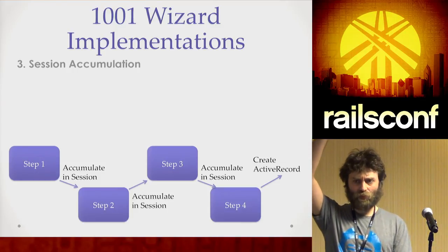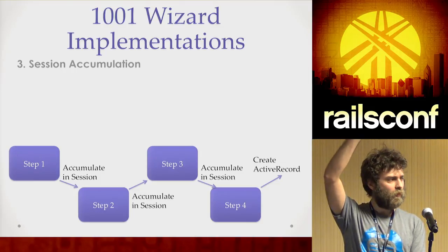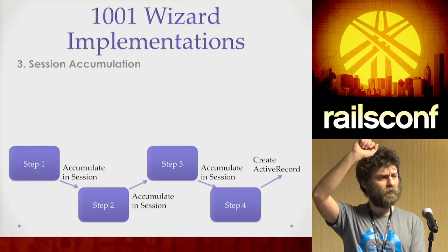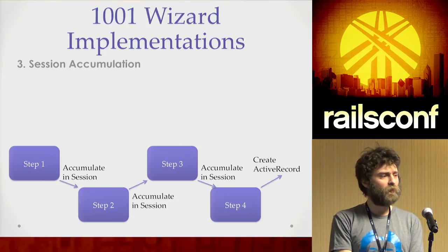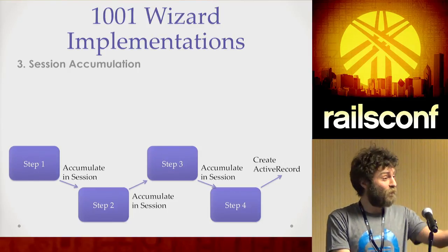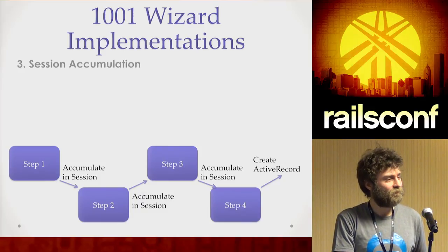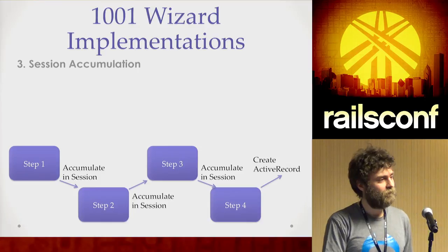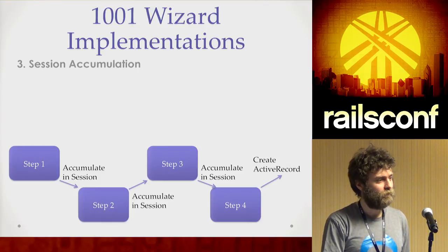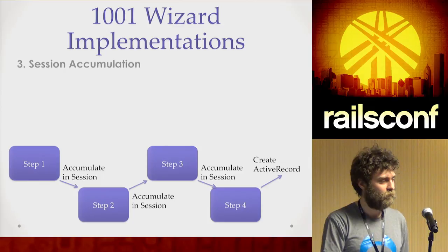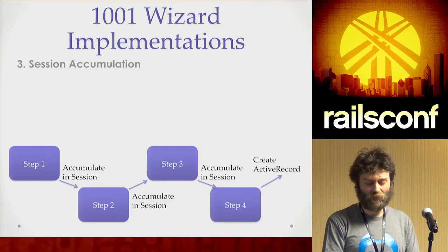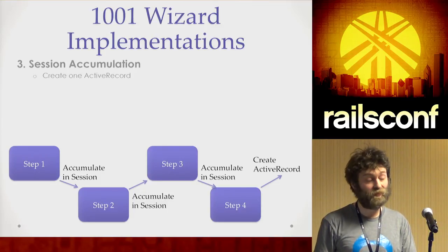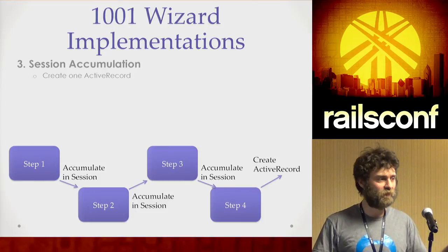Who here has written a wizard with the session accumulation approach? As you're going through the steps, you're storing all of the information in the session. There are lots of problems with that — the user can leave the session. You go through step one, gather basic info from the form, and when submitting instead of storing that in an ActiveRecord, you store it in the session using the session helper in the Rails controller. Then redirect to step two, submit that form again, add more stuff to the session. Once you reach the last step, you're ready to create the ActiveRecord. You end up with a lot of session management code in the controller, which breaks MVC.